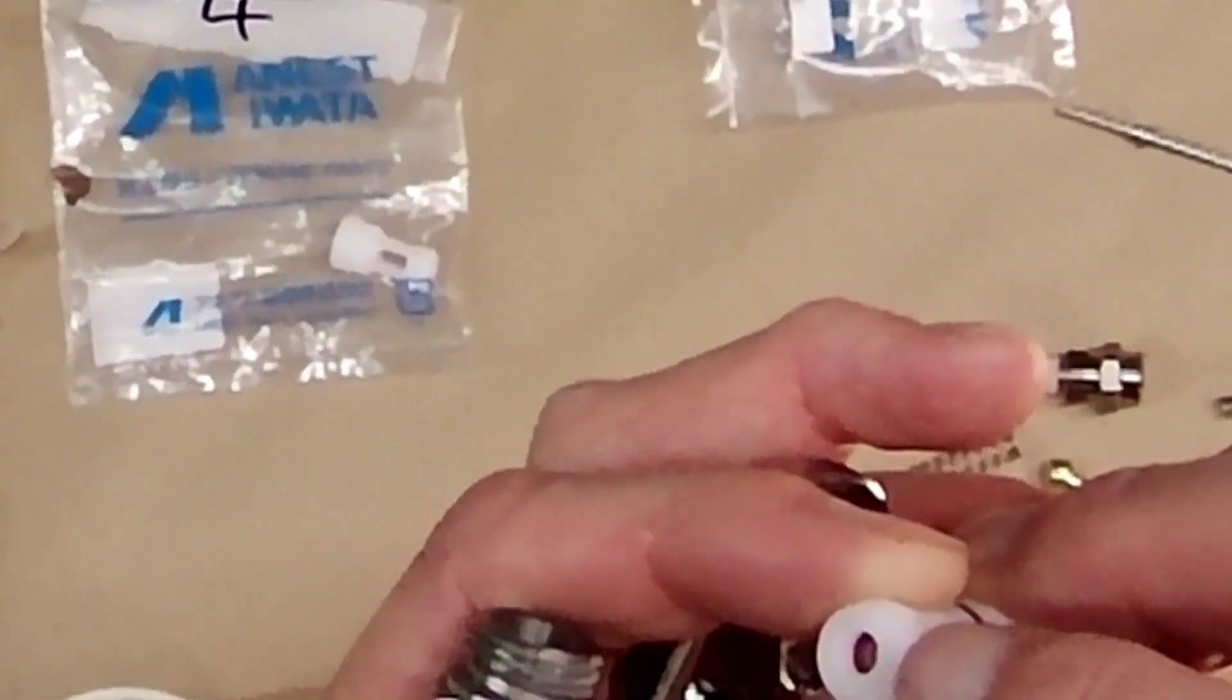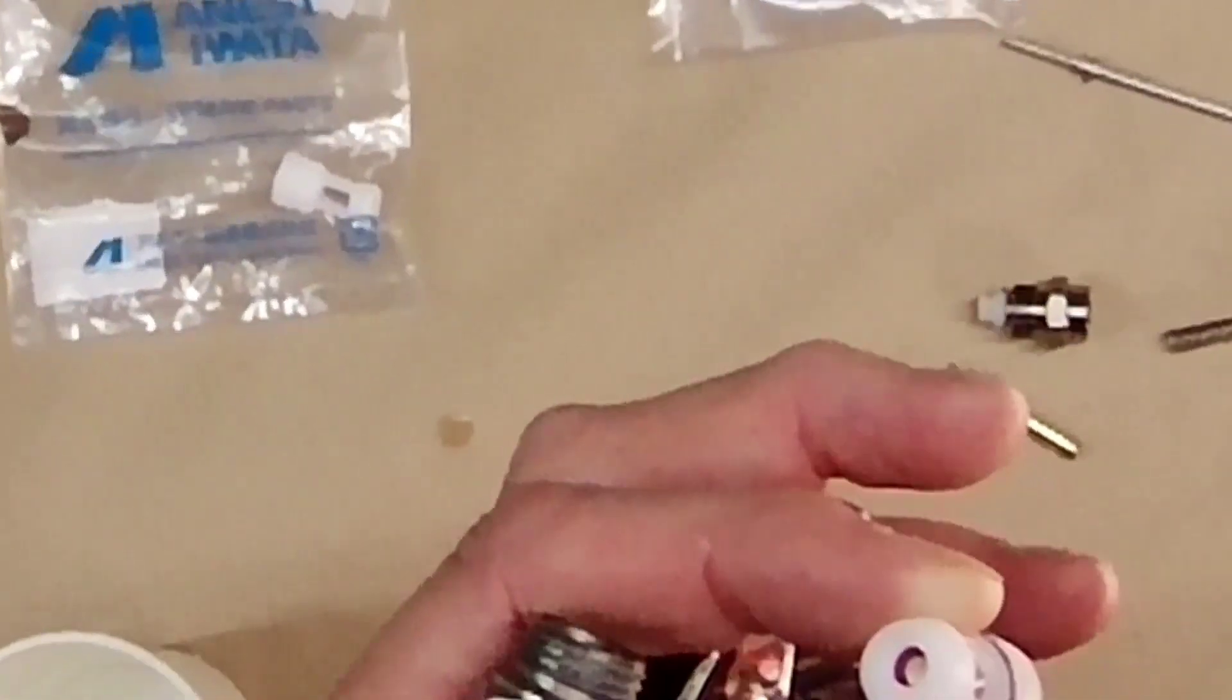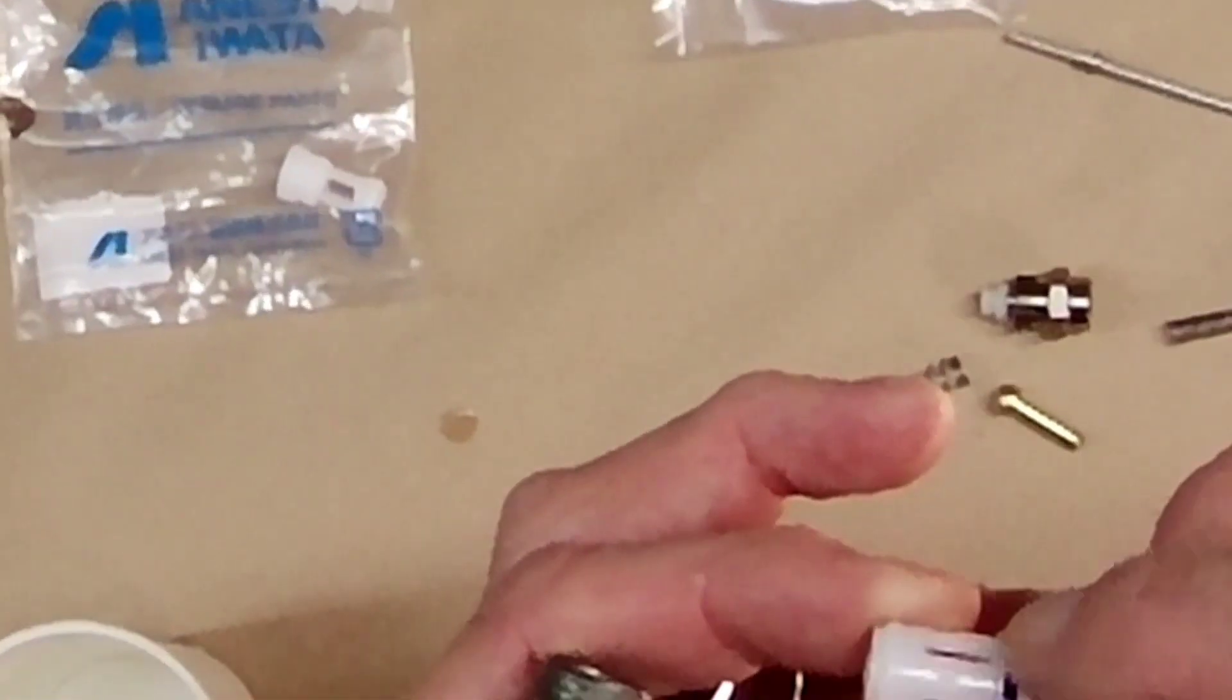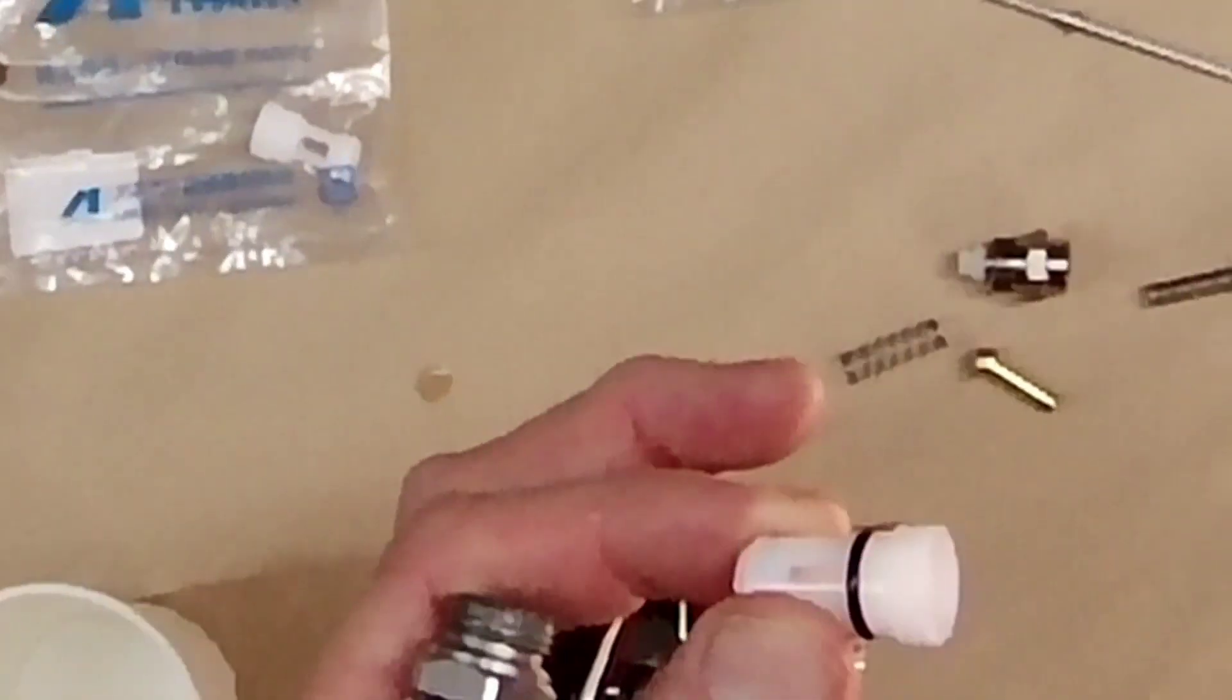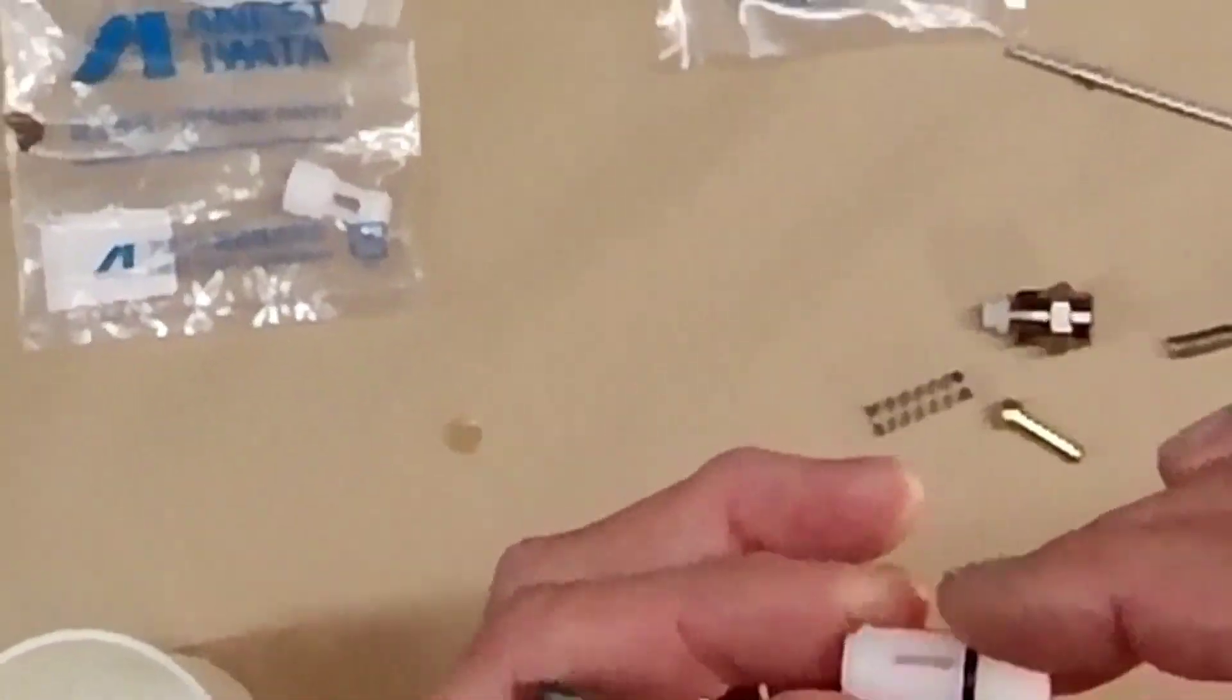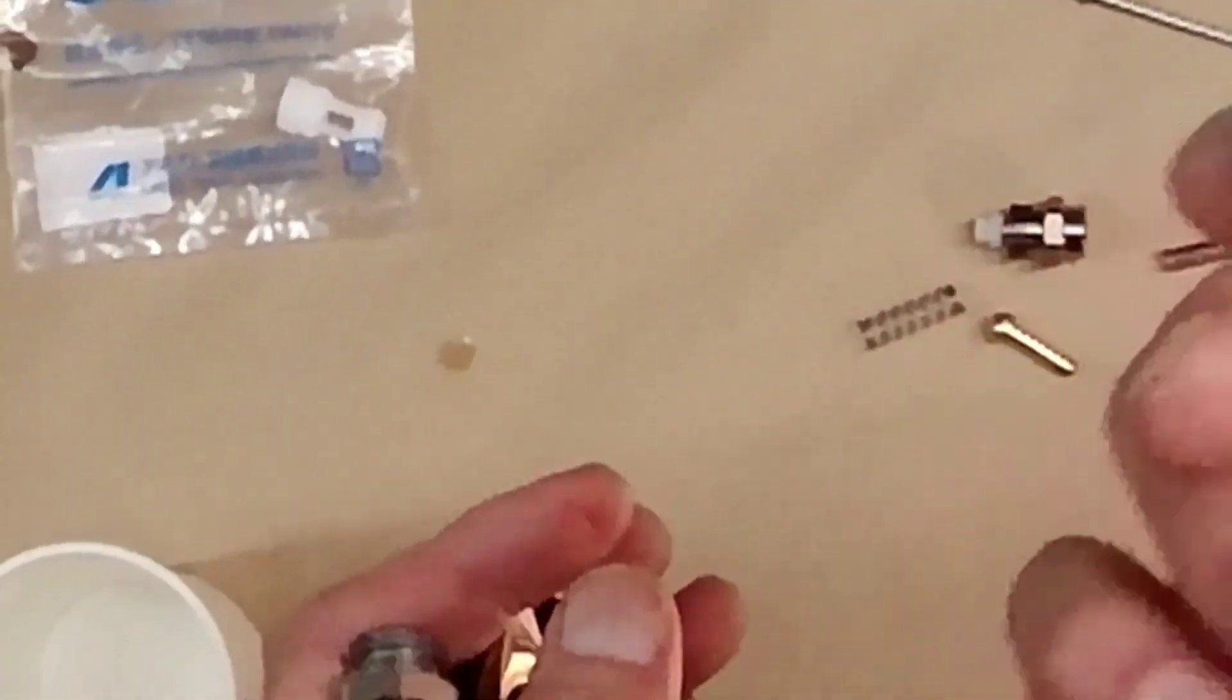When you pull the trigger it physically pulls this back, lets the air through which is this side and comes straight through. Now if you've got air coming through the front here behind the trigger, then it will be either that seal in there, which isn't available as a spare part but you would be able to dig it out and maybe find one that would suit, or this seal here. Now that seal is available as a separate spare part.